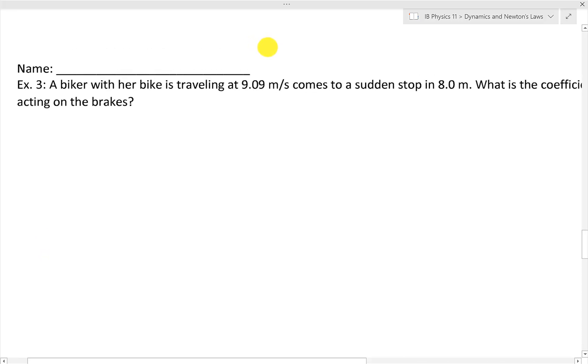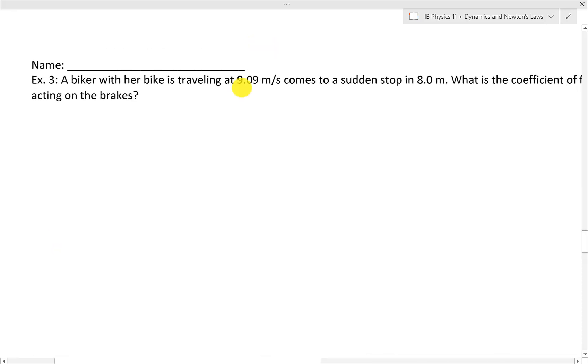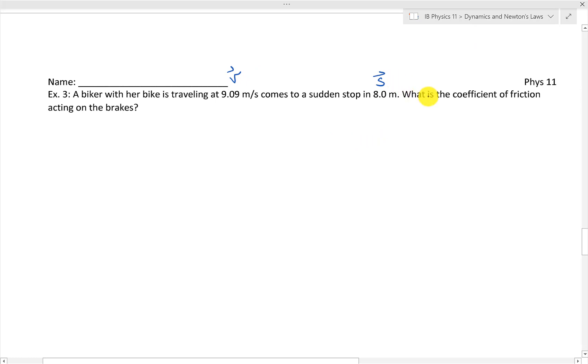A biker with her bike is traveling at 9.09 meters per second. This is a velocity, just to note that here. Comes to a sudden stop in 8 meters. Oh, interesting. So we're kind of delving away from forces. Very interesting. But let's see what's going on. What is the coefficient of friction acting on the brakes?